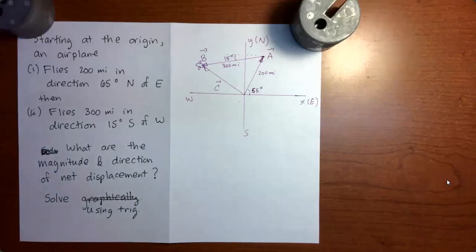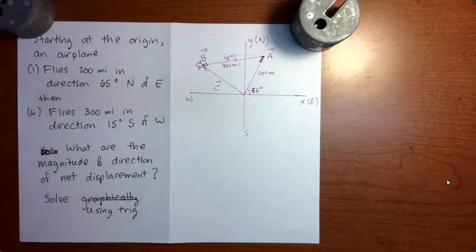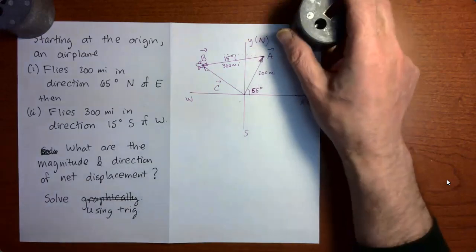In the previous video, we solved a vector addition problem using a graphical method in which we actually drew the vectors on graph paper and measured the result. In this video, we're going to solve the exact same problem, except we're going to use trigonometric calculations. However, before we do that, there's a new principle I need to introduce to you.